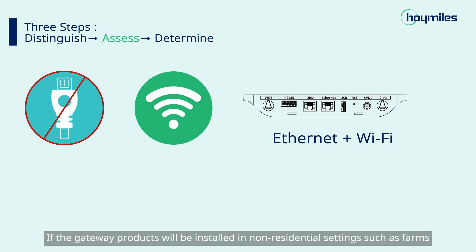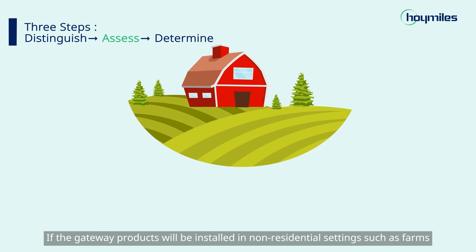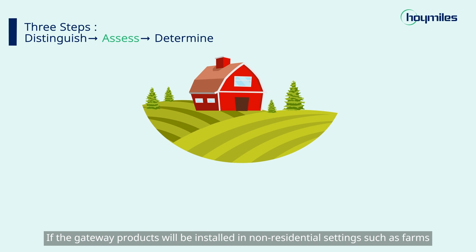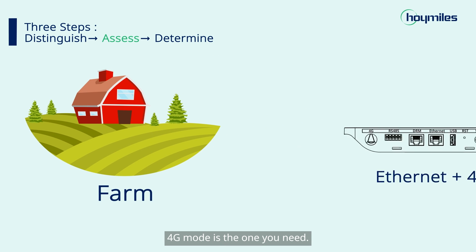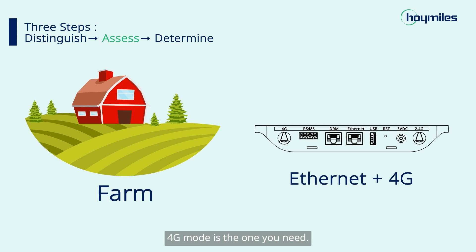If the gateway product will be installed in non-residential settings such as farms, 4G mode is the one you need.